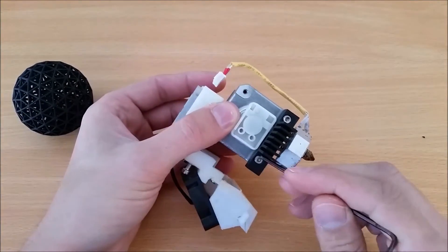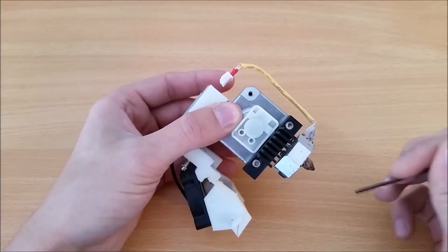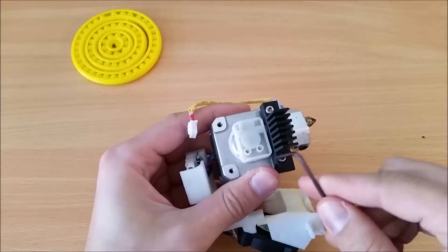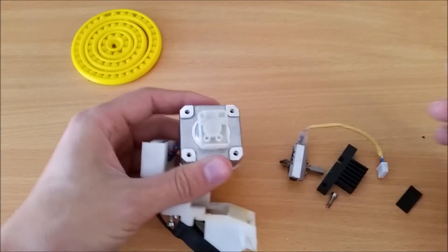What we need to do is undo these two screws here and here so you can remove the extruder assembly. And that all falls off.